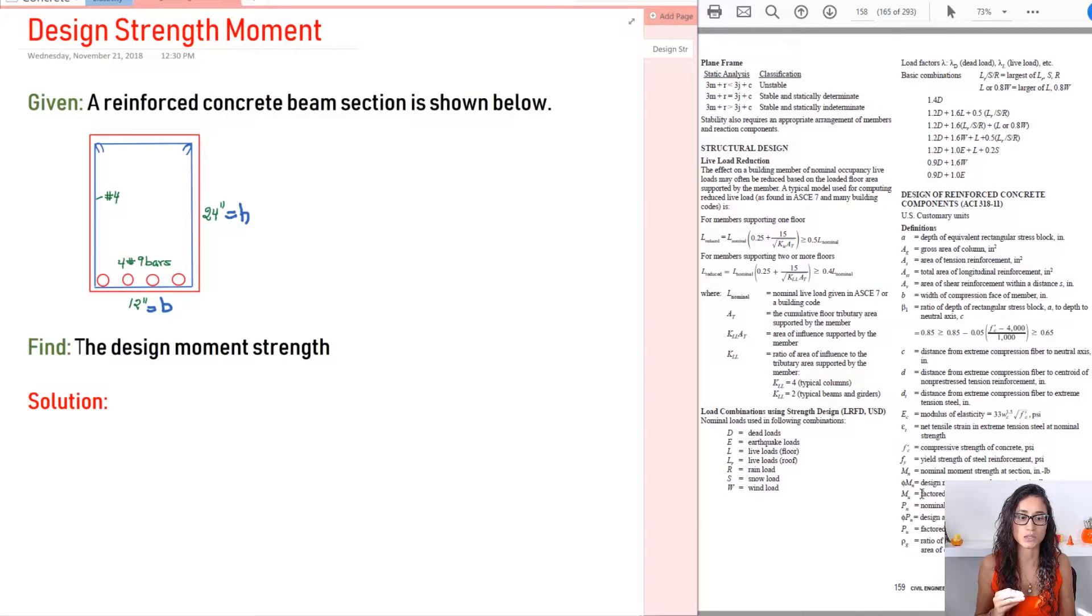So in this problem we will see the MN and phi MN and then MU I will just explain it briefly and then in the future I will make sure to post a video where we go over a problem where we have to calculate the factored moments. So the difference between MN and phi MN is the factor phi. So they're actually the same thing except for the design moment, we want to multiply it by phi which is most times 0.9 just so that we can be on the safe side.